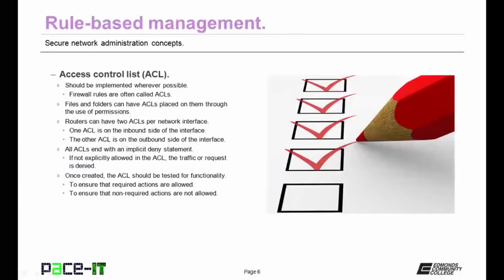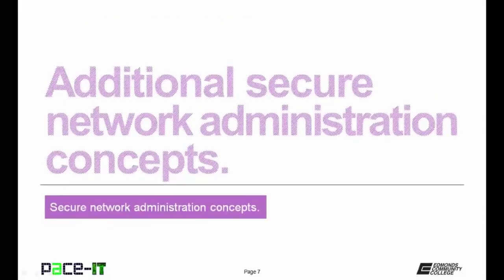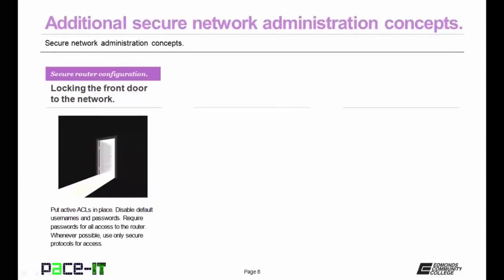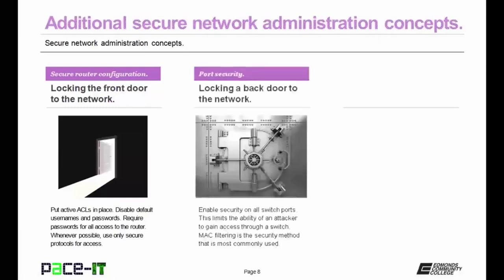That's to ensure that required actions are allowed and non-required actions are not. Now let's move on to some additional secure network administration concepts. The first is secure router configuration — locking the front door to your network. Put active ACLs in place, disable default usernames and passwords, require passwords for all access to the router, and whenever possible use only secure protocols to access the router. Then there's port security on switches — locking a back door to the network. Enable security on all switch ports to limit the ability of an attacker to gain access through an open switch port.